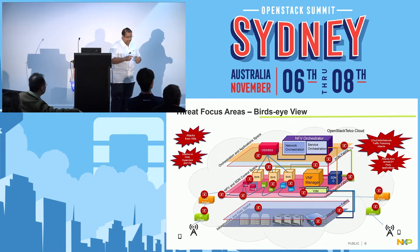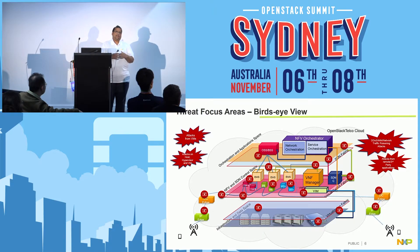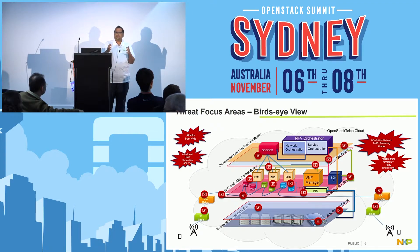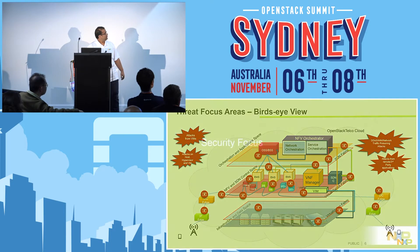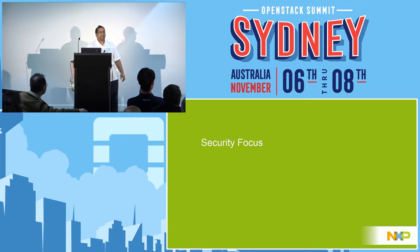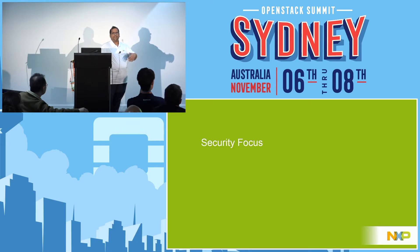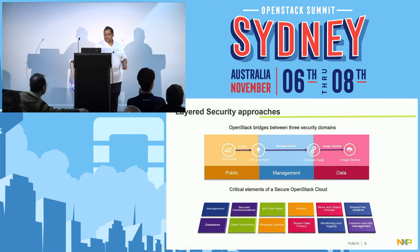Weak access controls such as testing logs are a concern — network administrators or deployers may leave testing traffic or testing information hidden in the system, which acts like a honeypot for hackers to gain more access. With this threat focus as a bird's eye view, we focus on the security requirements — what OpenStack is doing and how to secure each and every layer with a multi-layer approach into the OpenStack cloud.